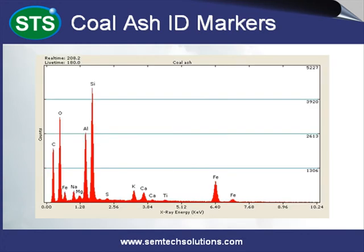The EDX spectrum of coal ash is similar to fly ash with an elevated silicon peak, moderate aluminum, oxygen, and iron, with minor amounts of magnesium, potassium, calcium, titanium, and sometimes heavy metals such as nickel and barium. Coal ash derived from low temperature or inefficient sources may still exhibit elevated amounts of carbon and sulfur, while at high temperatures these elements will have been burnt off.